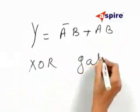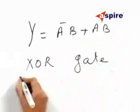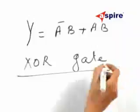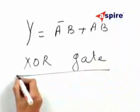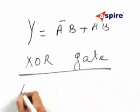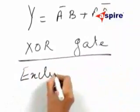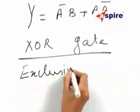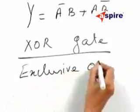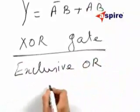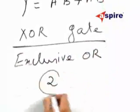The truth table is for the XOR gate. XOR gate means Exclusive OR — it is called the Exclusive OR gate. So, the answer is option 2.